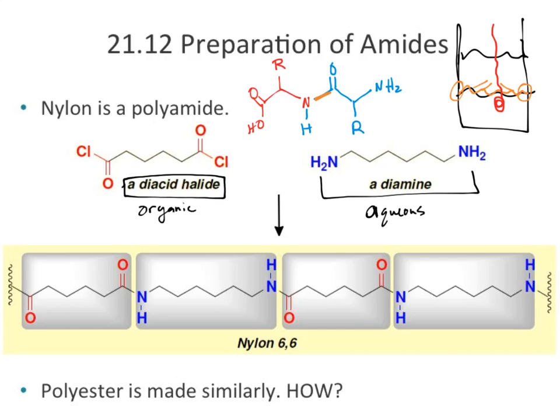A lot of polymer chemistry comes back to these quick, easy amide linkages. We can continue to extend the chain because there's a free amine on one end and a free acid on the other.